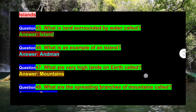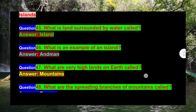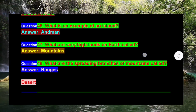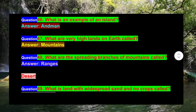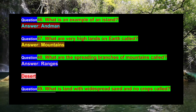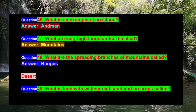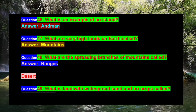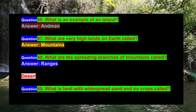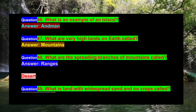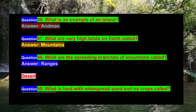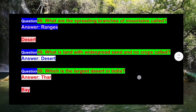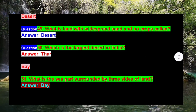Question 45: What is land surrounded by water called? Answer: Island. Question 46: What is an example of an island? Answer: Andaman. Question 47: What are very high lands on earth called? Answer: Mountains. Question 48: What are the spreading branches of mountains called? Answer: Rangers.